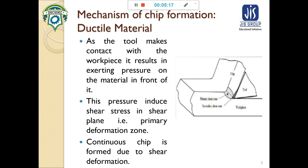There is also a secondary deformation zone, which is mainly due to friction of the chip on the rake surface of the tool. However, when machining ductile material at high speed, the secondary deformation zone does not create a significant problem and we can get continuous chips due to shear deformation.